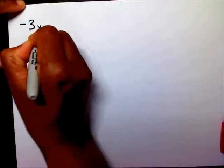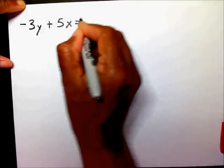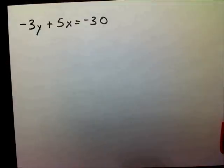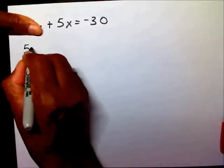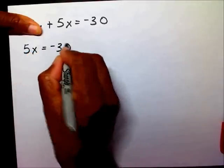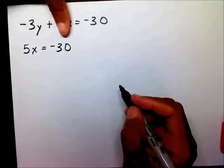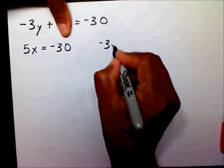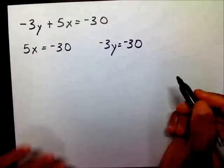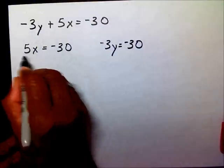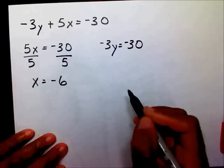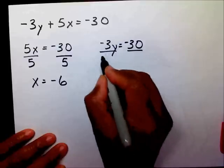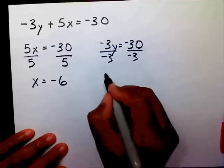Let's try another one: negative 3y plus 5x equals negative 30. I'm going to cover up my y-term, which will leave me with 5x equals negative 30. Then I'm going to cover up my x-term, which leaves me with negative 3y equals negative 30. Now I just need to solve both equations. So x equals negative 6. Dividing both sides by negative 3, y equals 10.